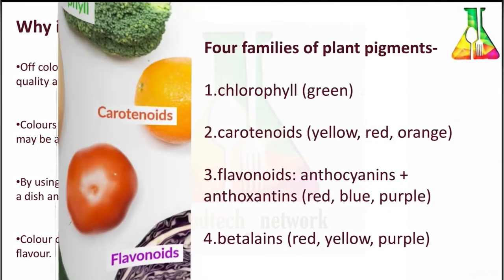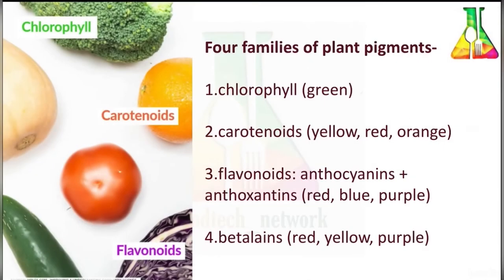There are four families of plant pigments: first is chlorophyll, which is green in color; second is carotenoids, which are yellow, red, and orange in color; third is flavonoids; and fourth is betalains. Besides these, we will also learn about anthocyanins and tannins.